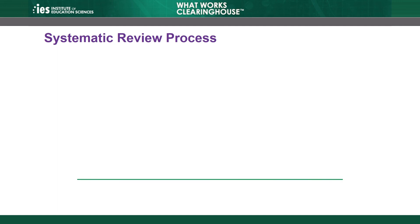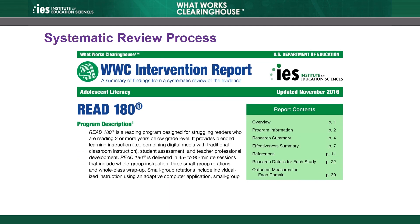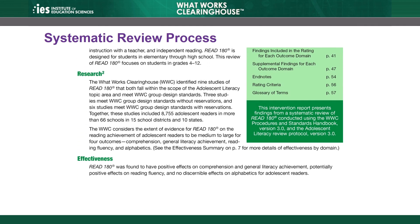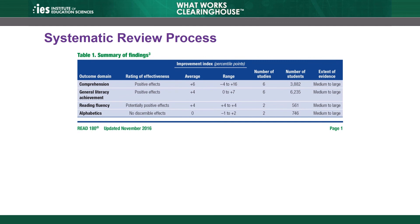WWC products summarize findings only from studies that meet WWC design standards. However, WWC products include all studies that were screened in as effectiveness studies of an intervention of interest in the reference list. The result of the WWC systematic review process is a report that summarizes and synthesizes findings from studies that meet standards, including positive effects, negative effects, and findings of no effect. In the case of the Read 180 review, we summarized the findings from the nine studies that met WWC design standards with or without reservations in an intervention report. The intervention report includes a table that summarizes the findings within each of the four outcome domains, as well as additional detail about the studies and their findings.